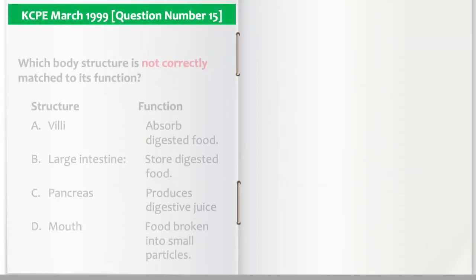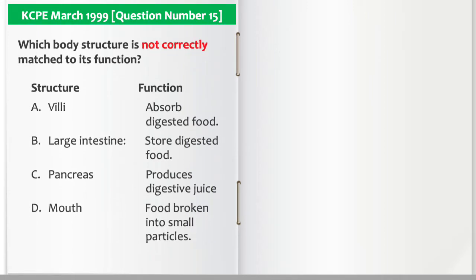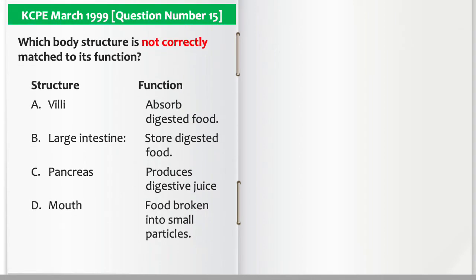Which body structure is not correctly matched to its function? This question requires that you correctly identify the functions of the villi, the large intestine, the pancreas, and the mouth during the digestion process.